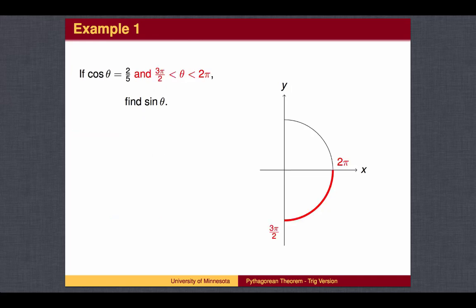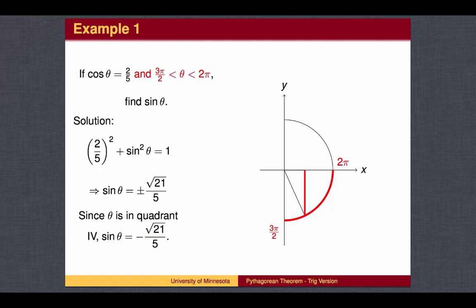Another way to ask the question is to specify the size of the angle theta. You could be given that cosine of theta is a positive number, and that theta itself is between 3 pi over 2 and 2 pi. You would then know that theta is in the fourth quadrant, and the sine of theta should be a negative number. Again, you will choose the negative number after applying the Pythagorean Theorem.